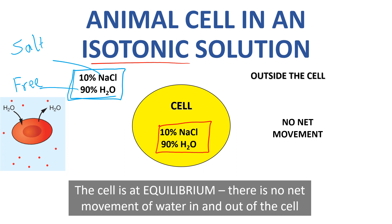In isotonic conditions, yes there are some water molecules moving in and out, but there's an equal number going in as going out through osmosis — because diffusion and osmosis don't stop, molecules are always moving, it's just that the movement is balanced.